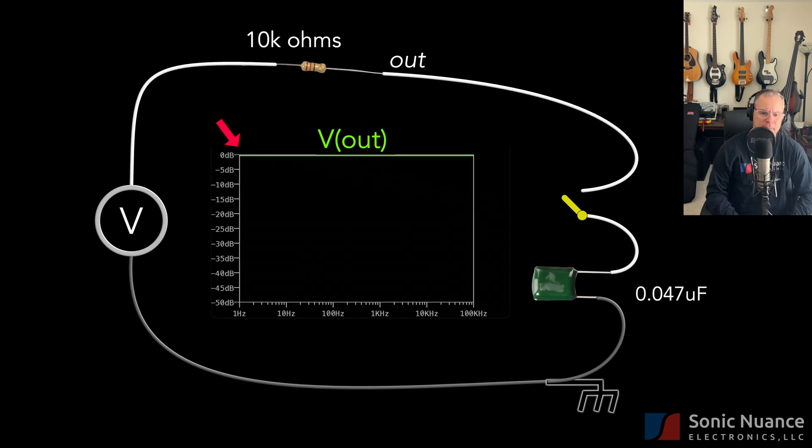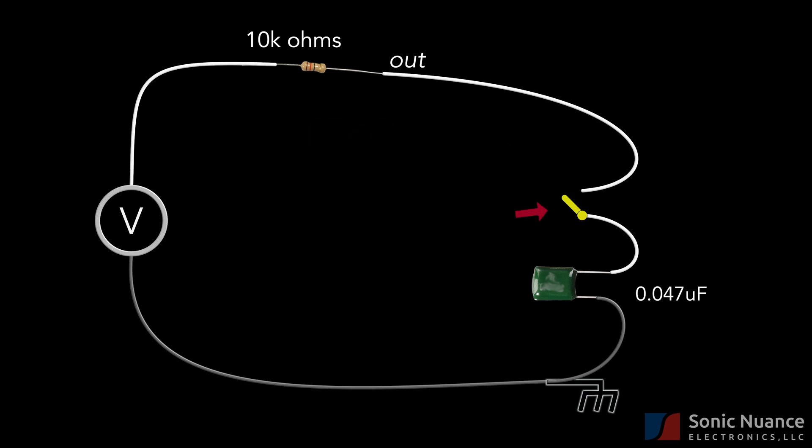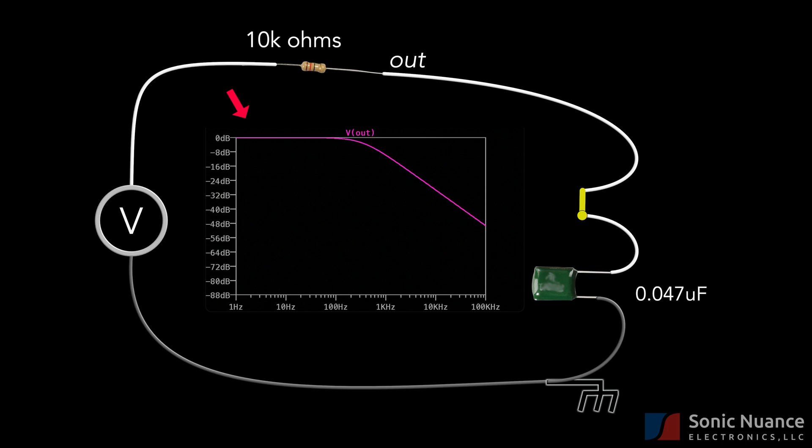The plot shows the result. Note that 0 dB can be interpreted as the output is the same as the input voltage. Now let's close the switch, which creates a low-pass filter. The signal at this node out can be found by treating the circuit like a voltage divider from the volume control video. Here is a frequency response plot of the output.